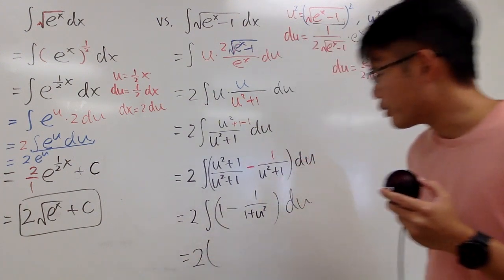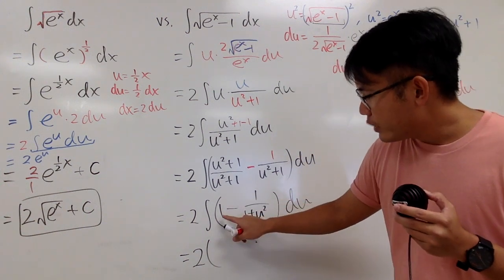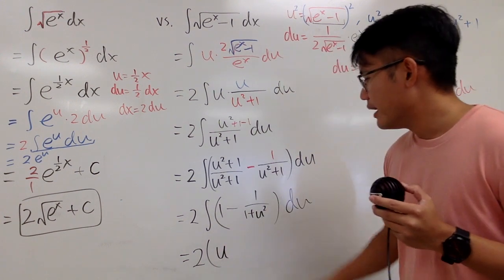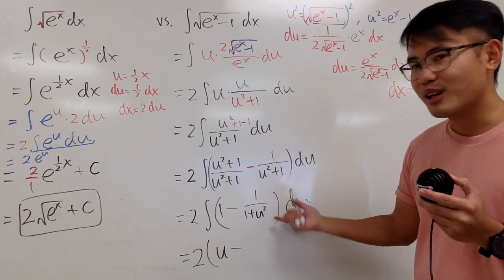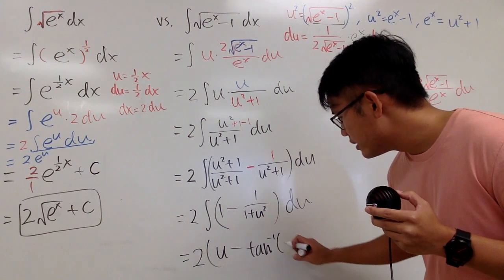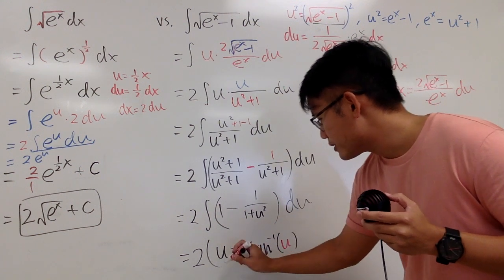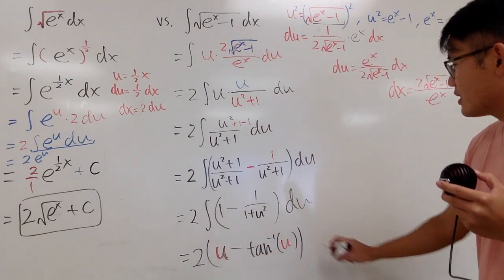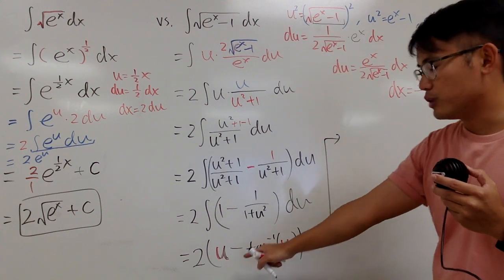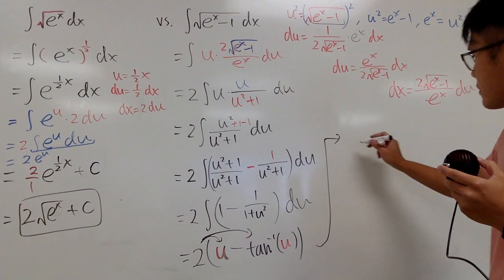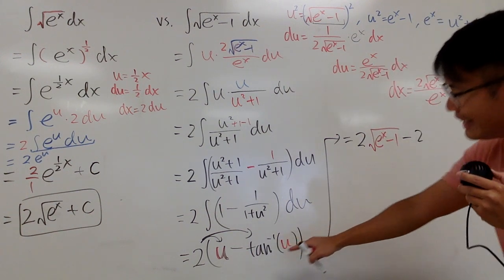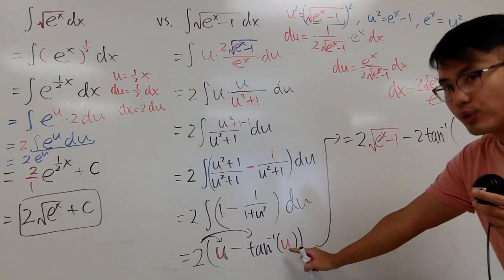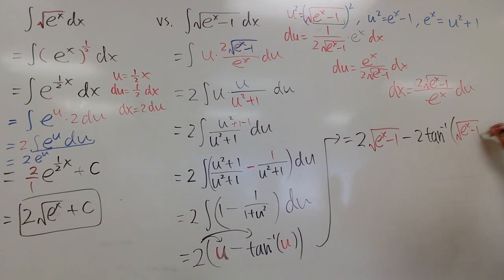Now integrate: 2 times the result. Integrating 1 in the u world gives u. Then minus — and this is why I switched the order — we recognize 1/(1 plus u squared) integrates to inverse tangent of u. So we get 2 times (u minus arctan(u)). Plugging back in our original u = sqrt(e to the x minus 1), we distribute: 2 times the square root of e to the x minus 1, minus 2 times arctan of the square root of e to the x minus 1, plus c.